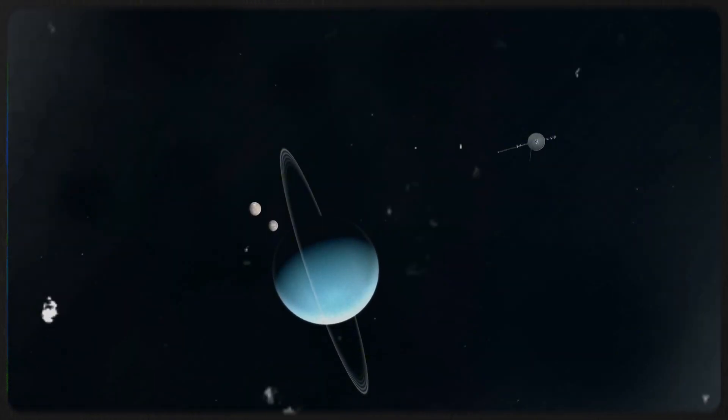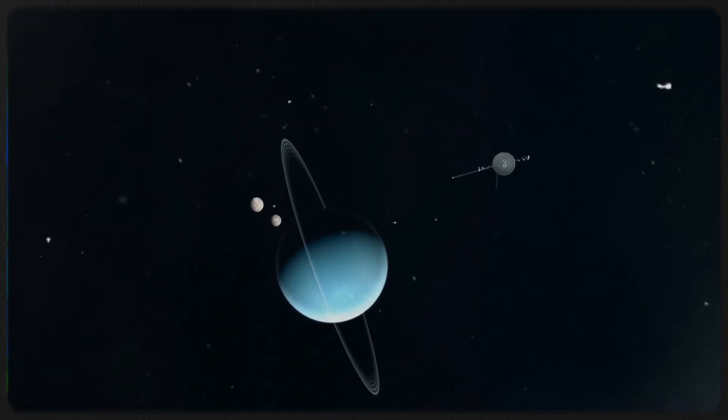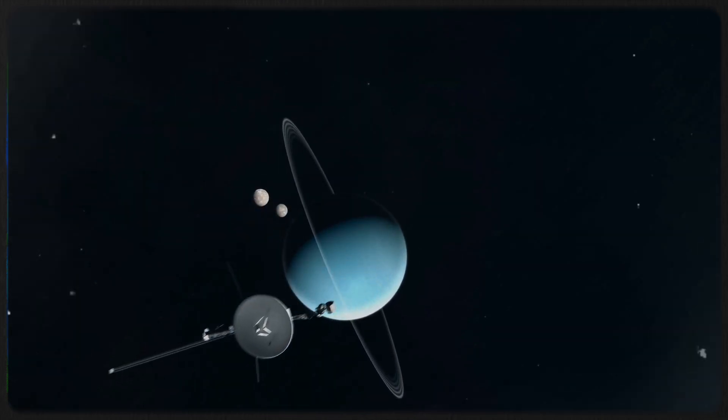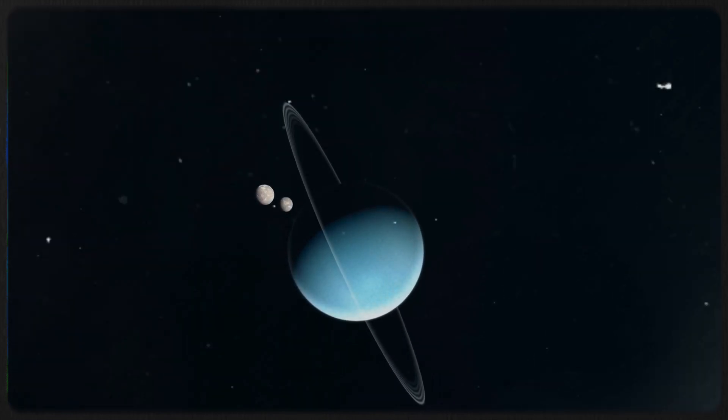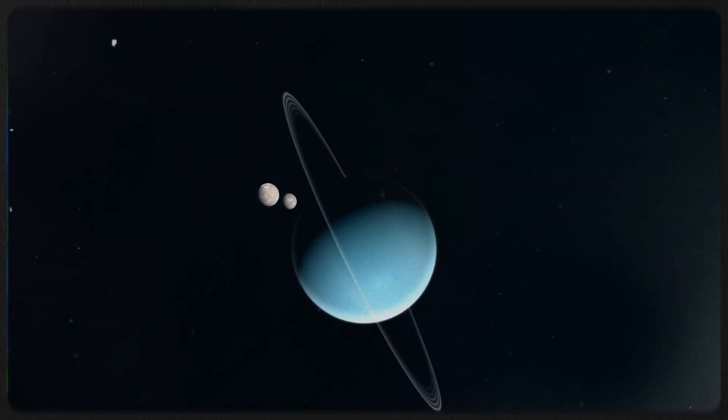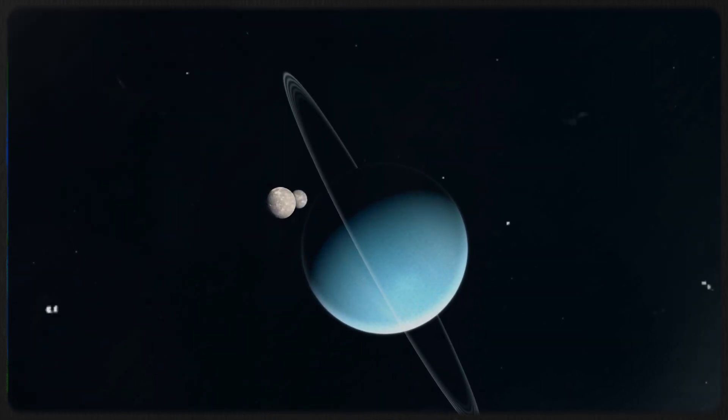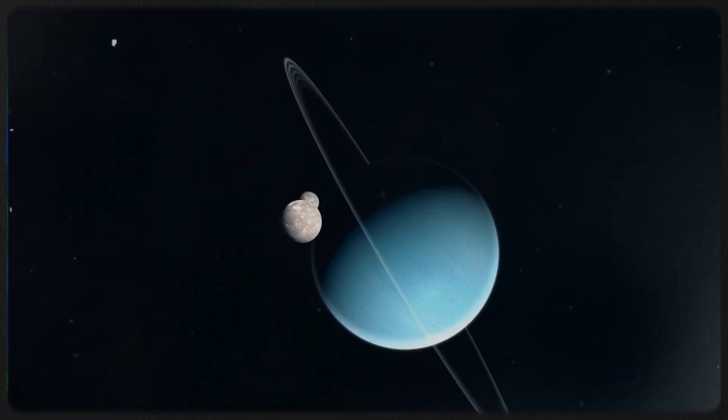In 1986, Voyager 2 discovered 10 new moons around Uranus, adding to the planet's growing count of ring satellites. Three years later, it flew approximately 2,980 miles above Neptune's blue methane atmosphere and recorded the fastest wind speeds ever observed on a planet, reaching up to 1,000 miles per hour.